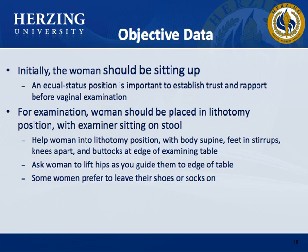For objective data, first inspect the external genitalia, noting skin color, hair distribution, symmetry, and lesions. Inspect the perineum, clitoris, labia minora, urethral opening, vaginal opening, and anus. Palpate the urethra, Skene's glands, Bartholin's glands, and perineum. Assess vaginal tone and vaginal wall bulging or urinary incontinence.